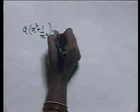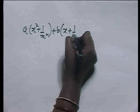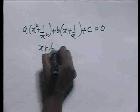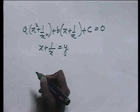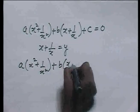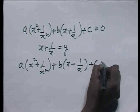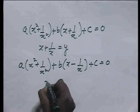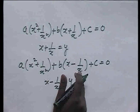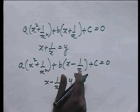Thus, we find that we can solve equations of the form a(x² + 1/x²) + b(x + 1/x) + c = 0 by the simple substitution y = x + 1/x. Similarly, we can solve equations of the form a(x² + 1/x²) + b(x - 1/x) + c = 0 by the substitution y = x - 1/x. In both cases, the equation reduces to quadratic form and we can solve it.